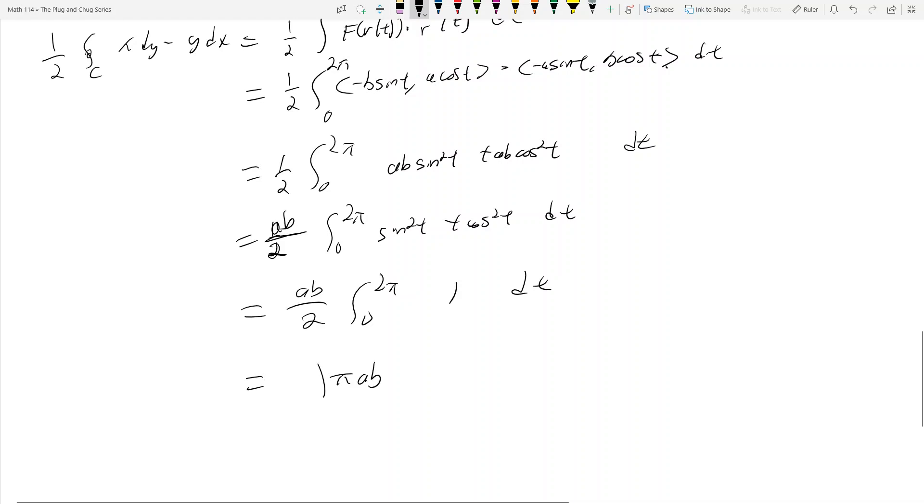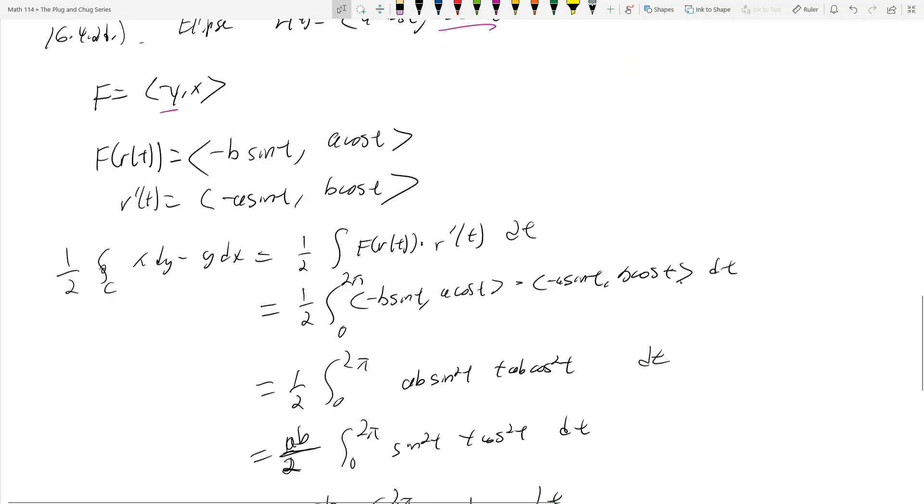This evaluates to πab as the area. If you are familiar with the area of an ellipse when you have the minor and major axes, I'm pretty sure this is the formula for the area of an ellipse.